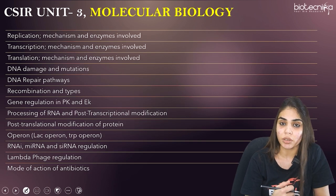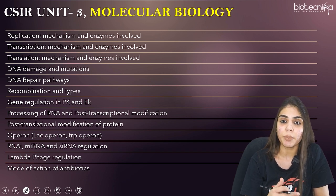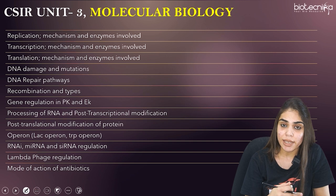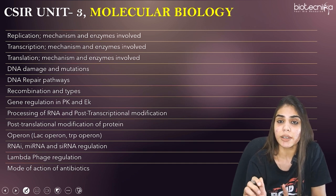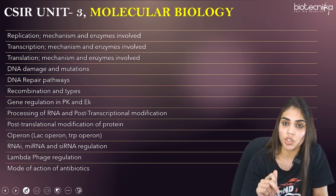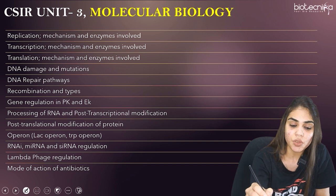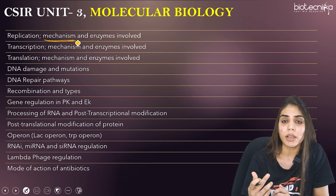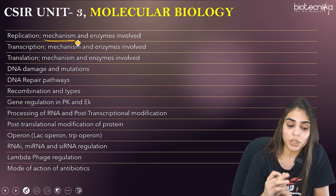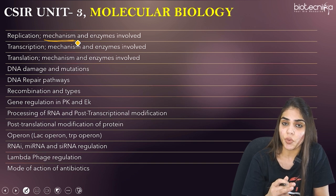Coming to Unit 3, which is Molecular Biology. Make sure you are learning the fundamental processes as well as the enzymes and mechanisms involved. The first fundamental process is replication. You should be thorough with the enzymes involved in initiation, elongation, and termination, as well as the mechanisms. You should know in which step ATP is required and which step is the active process.